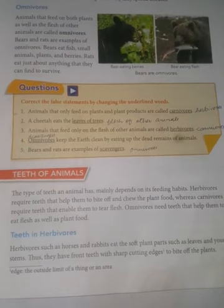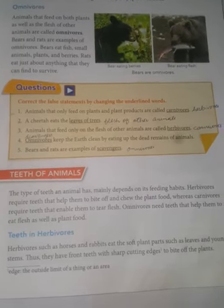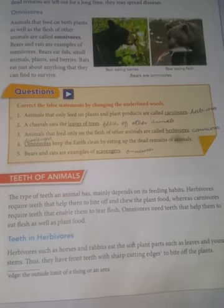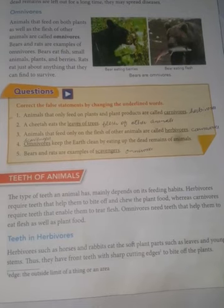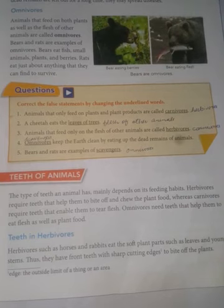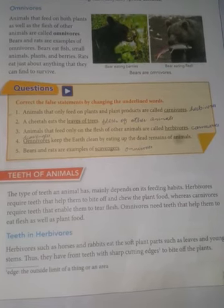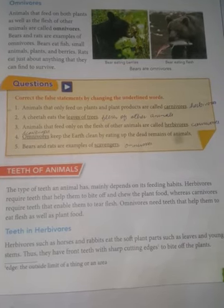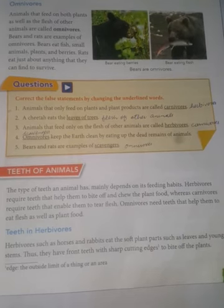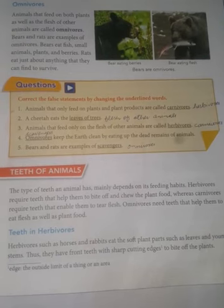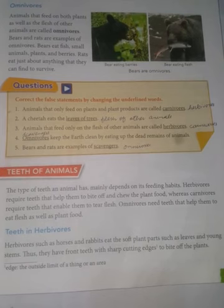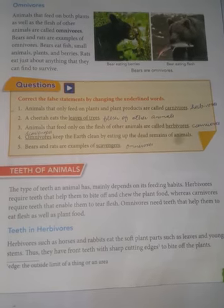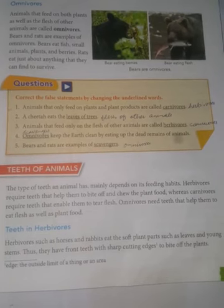Now here are questions to correct the false statements by changing the underlined words. We just read about eating habits — herbivores, carnivores, scavengers, and omnivores. Question one: animals that only feed on plants and plant products are called carnivores — that's wrong, they are herbivores. Question two: a cheetah eats the leaves of trees — no, cheetah is not a herbivore, it is a carnivore that eats the flesh of other animals. Question three: animals that feed only on the flesh of other animals are called herbivores — no, they are called carnivores.